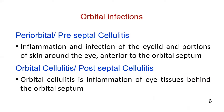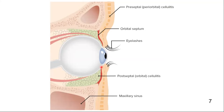Orbital infections are of two types. Periorbital or preseptal cellulitis — that is an infection of the eyelid structures anterior to the orbital septum — will occasionally lead to orbital cellulitis or postseptal cellulitis, which is infection behind the orbital septum. The infection anterior to the orbital septum is periorbital or preseptal cellulitis, and the infection behind the orbital septum is postseptal or orbital cellulitis.